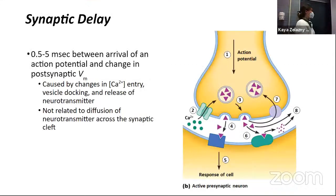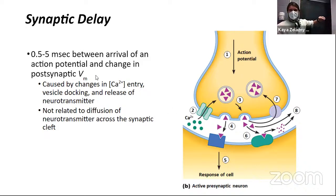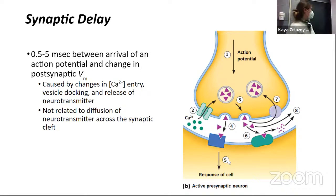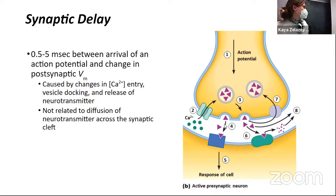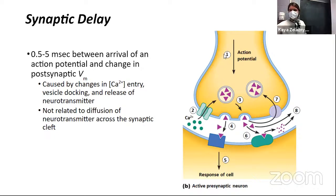This process takes a little while — on the order of 0.5 to 5 milliseconds between when the action potential comes down the axon, reaches the axon terminal, and has an actual effect on the post-synaptic cell. Some people think this delay is due to the time it physically takes to cross the synaptic cleft, but that's not true. It's actually the whole calcium process — the multiple steps before we get neurotransmitter into the cleft — that takes all the time.